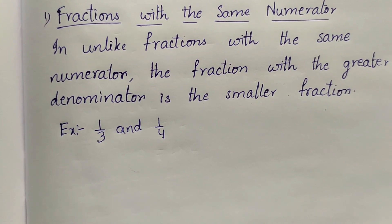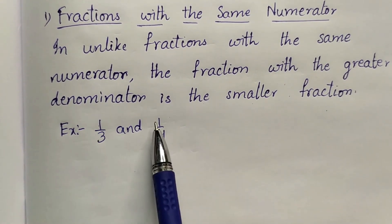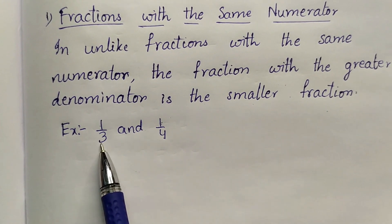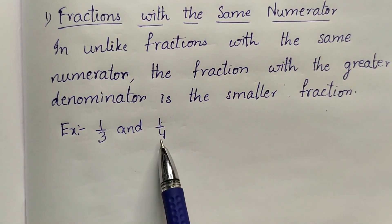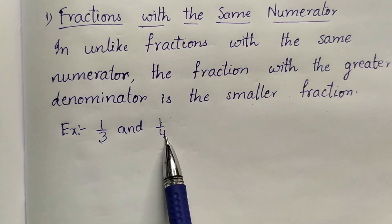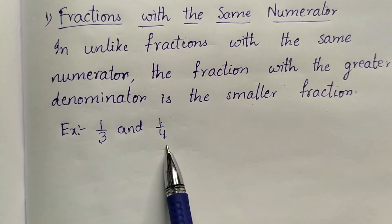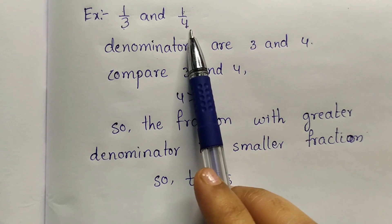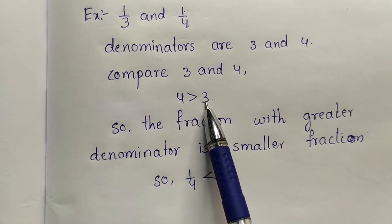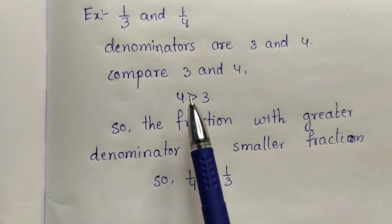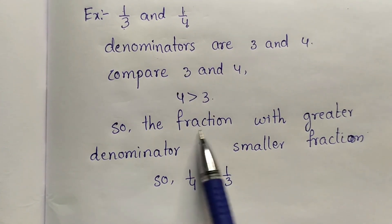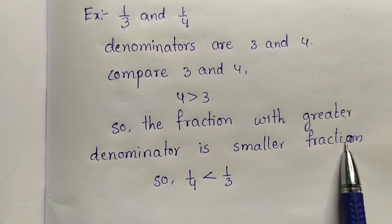Example: 1 by 3 and 1 by 4. Here the numerators are the same — 1 and 1. The denominators are different — 3 and 4. The greater denominator: which one is greater, 3 or 4? 4 is the greater. So this fraction is the smaller fraction. Compare the denominators 3 and 4 — 4 is greater than 3, so the fraction 1 by 4 becomes the smaller fraction. The fraction with the greater denominator is the smaller fraction.